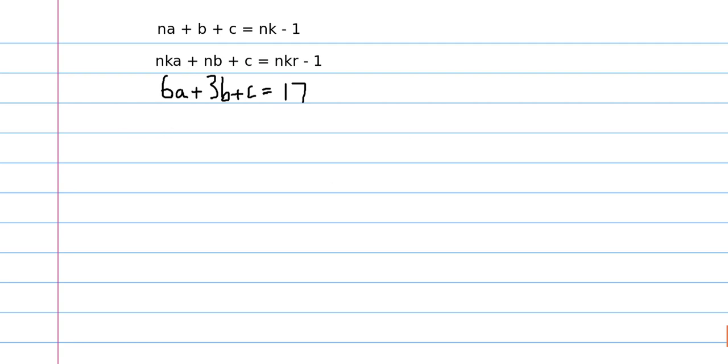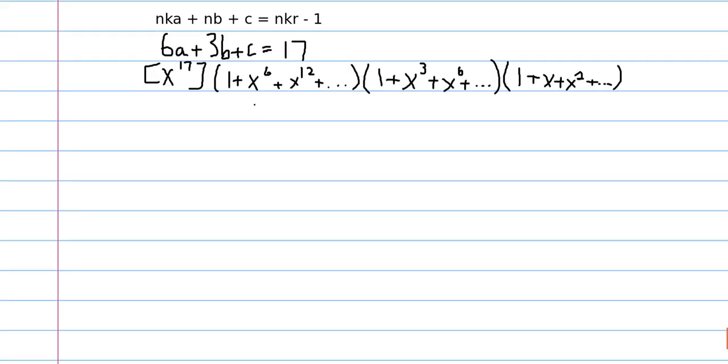And now we can transform this into another generating functions problem, and that is finding the coefficient of x to the 17th in this multiplication of polynomials. So now we have our original starting polynomial. And before we just had two of these, and it's easy enough to multiply by that, and that's why we were able to get such a nice answer to our problem.